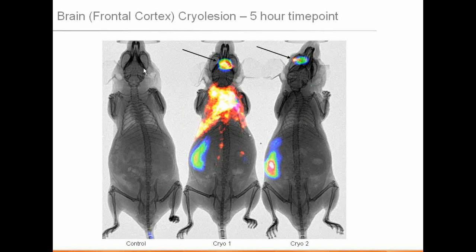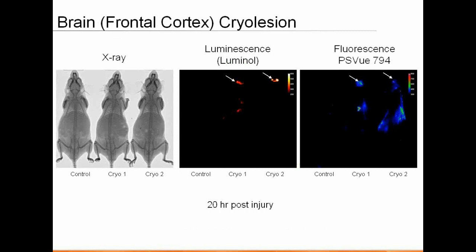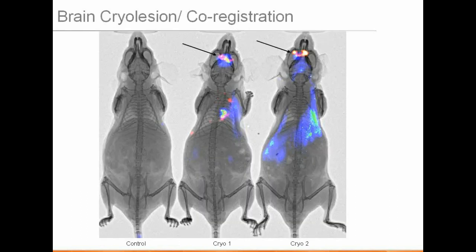These studies can also be conducted longitudinally. At a 20-hour post-injury time point, the whole-body luminescence has dropped off, but you can still nicely see significant myeloperoxidase activity at the cryo lesion site, as well as still the brain injury signal from PSPU 794 — and again, this can all be co-registered.